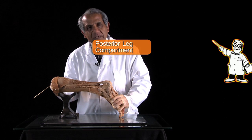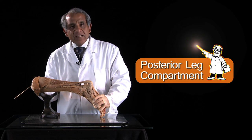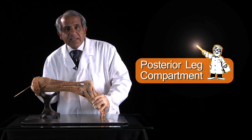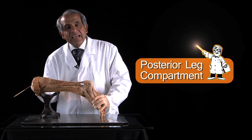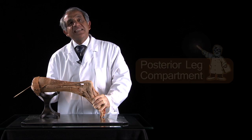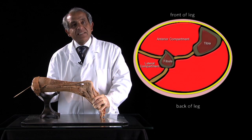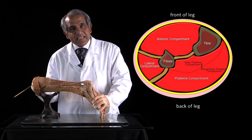The posterior compartment of the leg, which is the bulkiest of the leg compartments, is subdivided into two parts by a fascial septum.